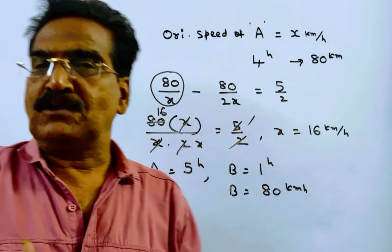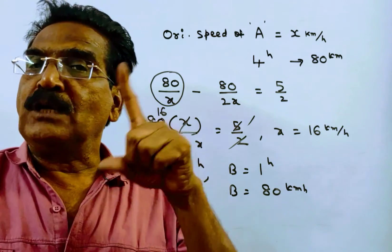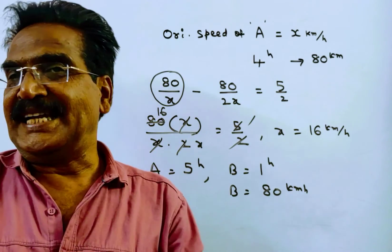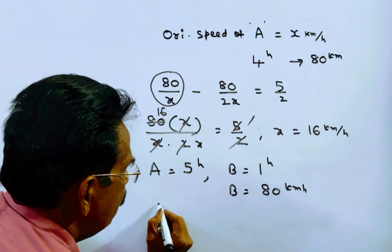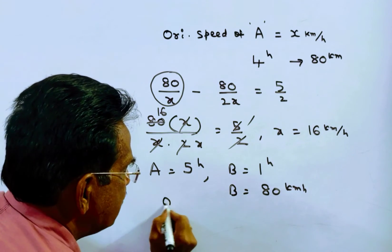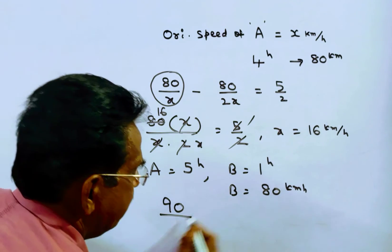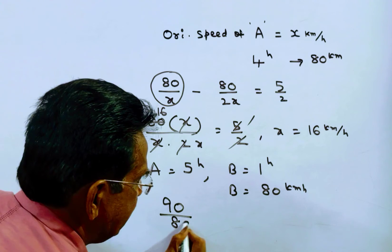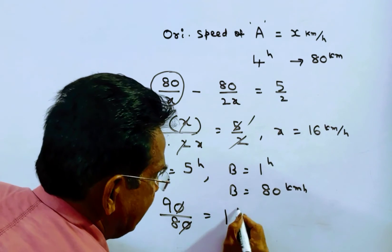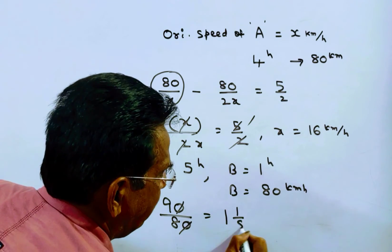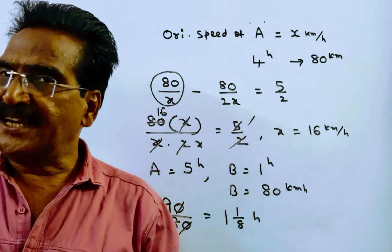Friends, now the question is how much time will B take to cover 90 km at his speed. So the time is equal to distance by speed, which is 90 by 80. The 0 gets cancelled, giving 9 by 8, that is 1 and 1 by 8 hours.